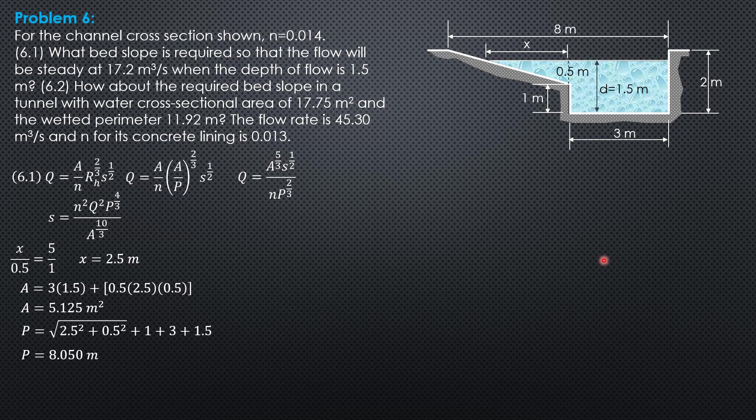Substitute in our formula for S. S therefore is 0.014 square then 17.2 square perimeter to the 4 thirds, 8.05 to the 4 thirds over area 5.125 to the 10 thirds.